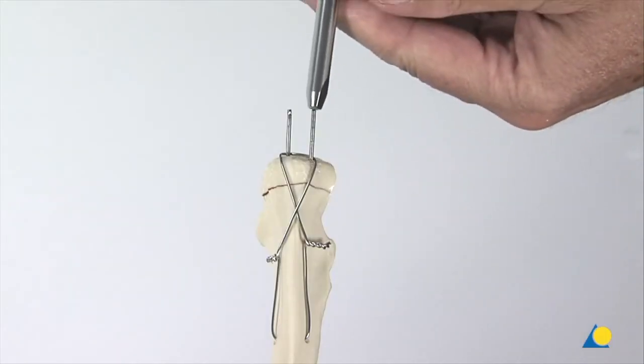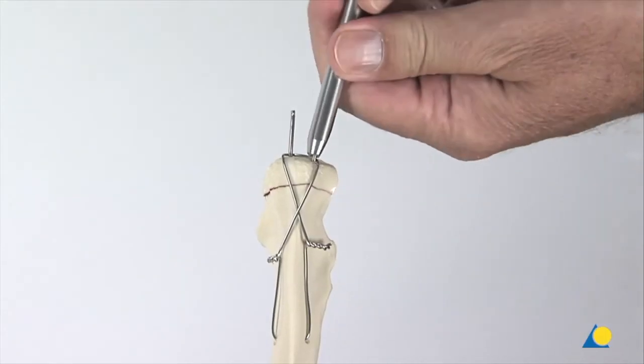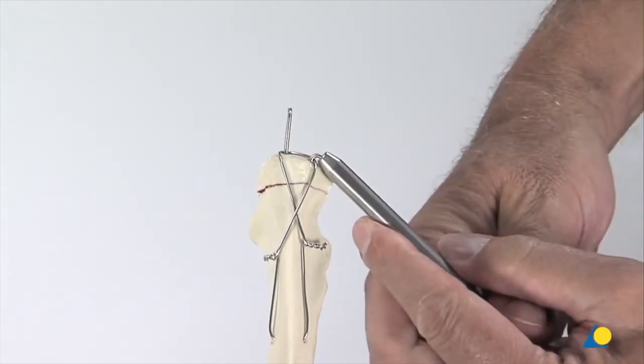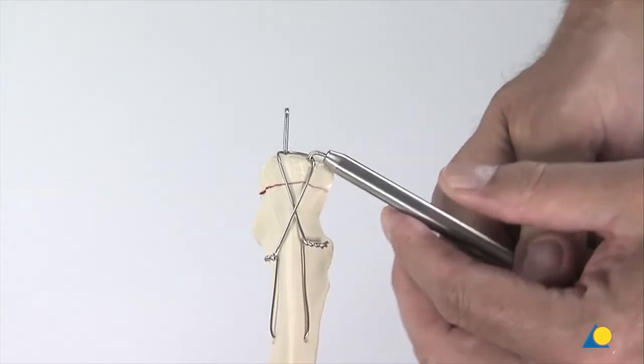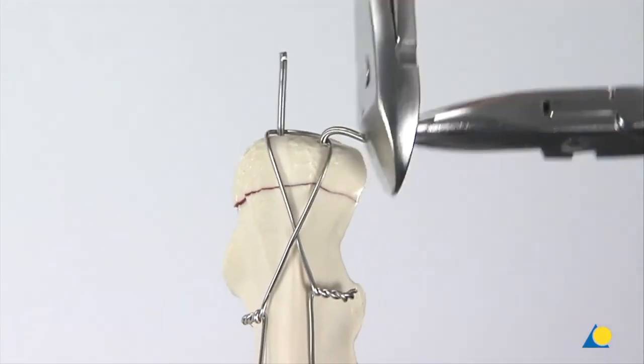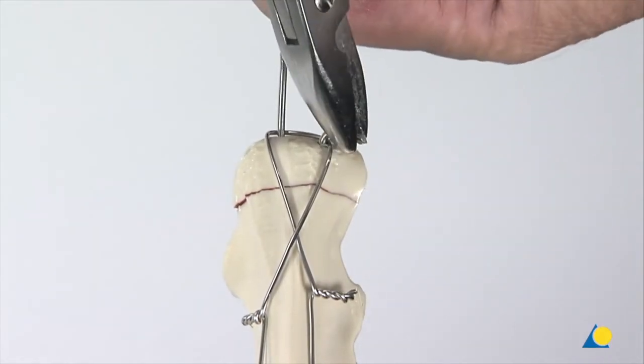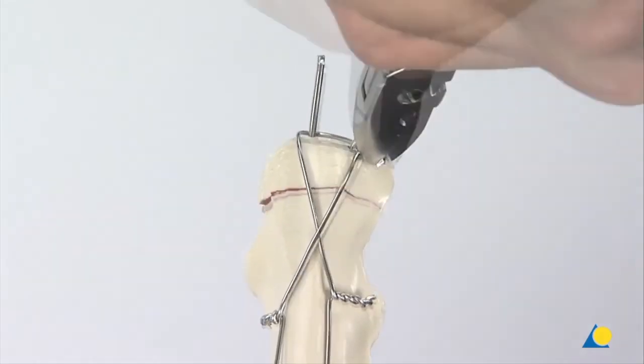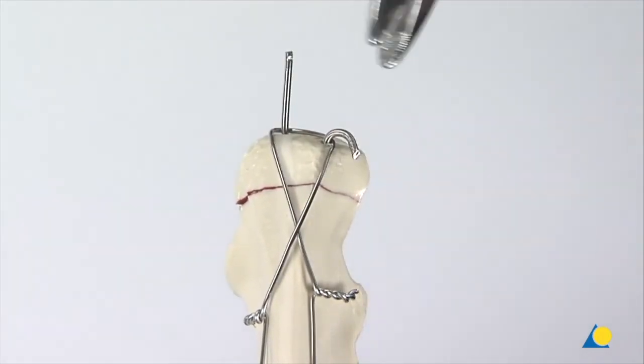With the wire bending iron, the K-wire is bent approximately 120 degrees. The K-wire is trimmed with the wire cutter. The K-wire is then bent further using the wire bending pliers so that the end of the wire can be inserted into the bone.